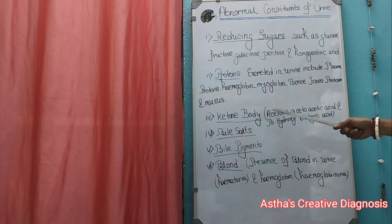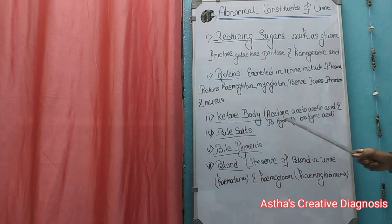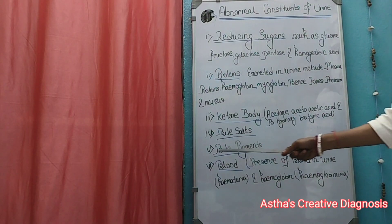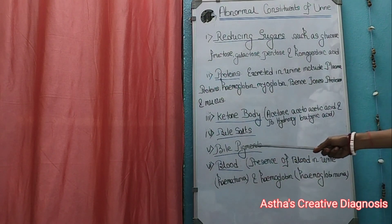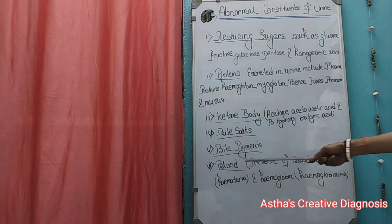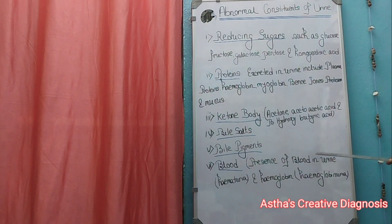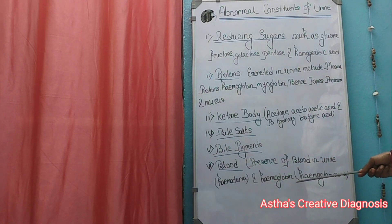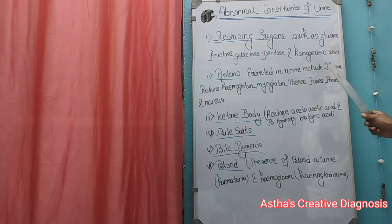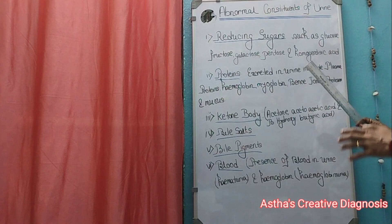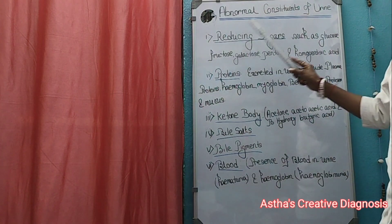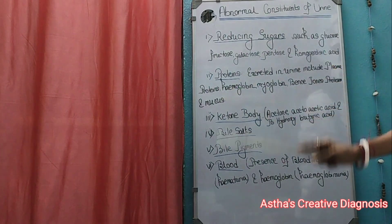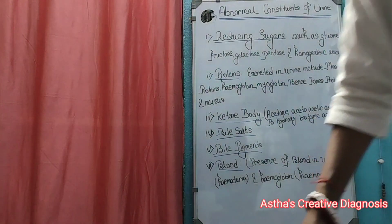Ketone bodies include acetone, acetoacetate, and beta-hydroxybutyrate. Number four and five: bile pigments. Number six: blood — the presence of blood in urine is called hematuria, and the presence of hemoglobin in urine is called hemoglobinuria.